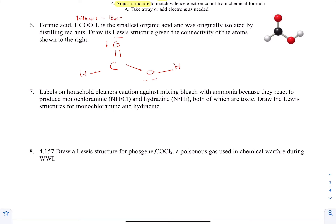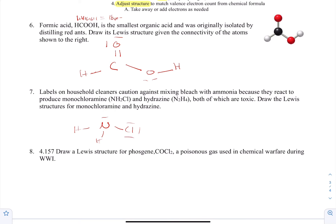Number seven: labels on household cleaners caution against mixing bleach with ammonia because they react to produce monochloramine and hydrazine, both toxic. Draw the Lewis structures. For monochloramine, which atom is the center without expanding its octet? Nitrogen has three open spots for bonds. So nitrogen is the center atom, not chlorine. Put nitrogen in the middle, connect it to two hydrogens and a chlorine, then give everybody an octet. Valence electrons: five plus two plus seven equals 14. Counting electrons in the structure gives 14. Correct — that's the Lewis structure for monochloramine.